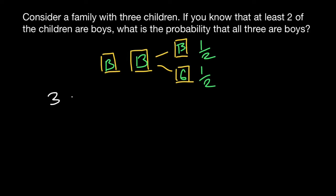This family may have three girls. This is one combination of how they may have three children. Another combination would be two girls and one boy. And another combination would be two boys and one girl. And the last combination would be three boys.